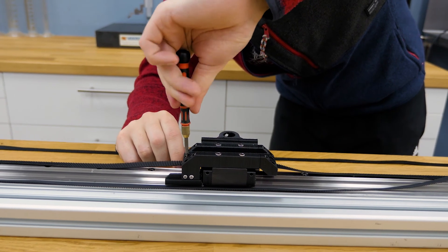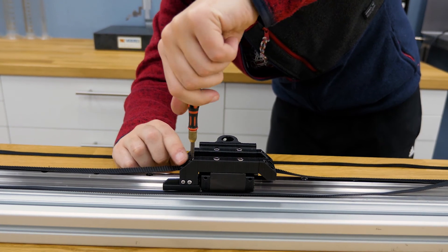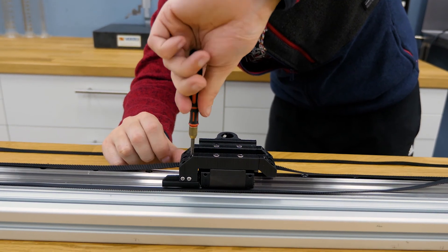I fixed the belt into place with two M3 screws on the guide rail car block.